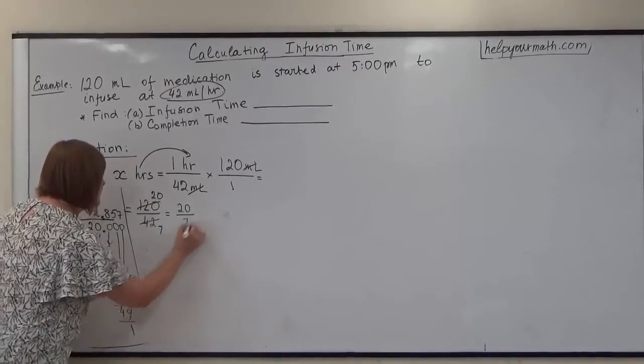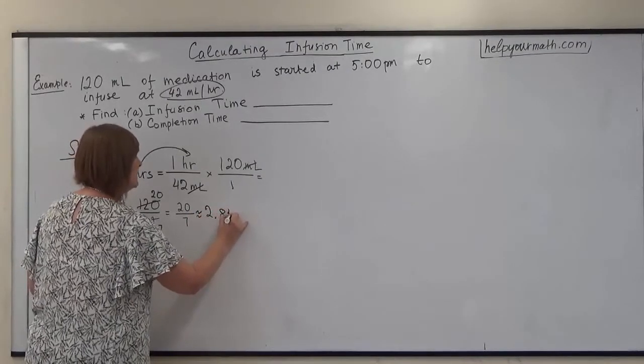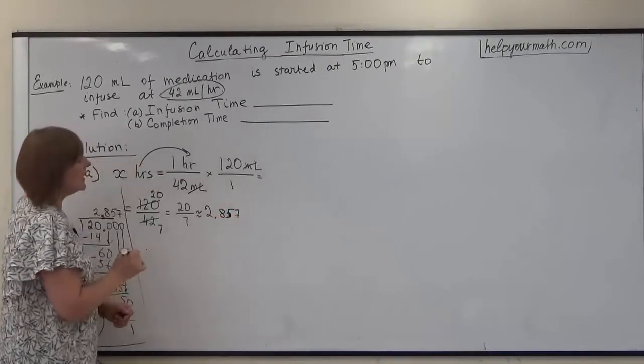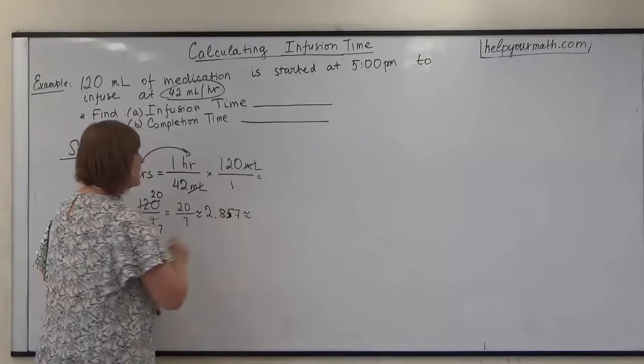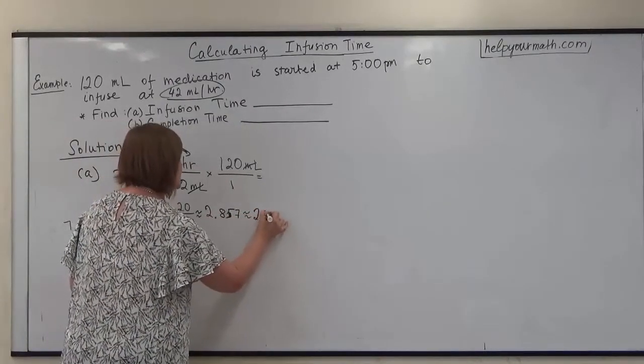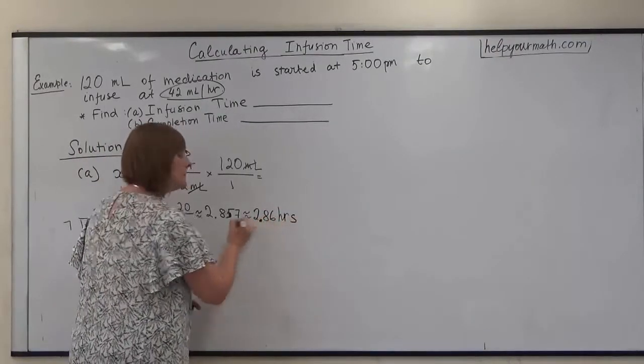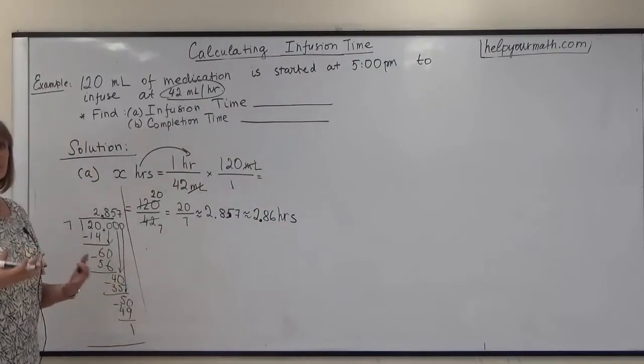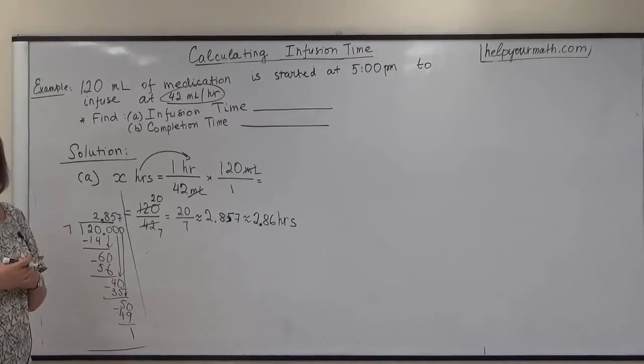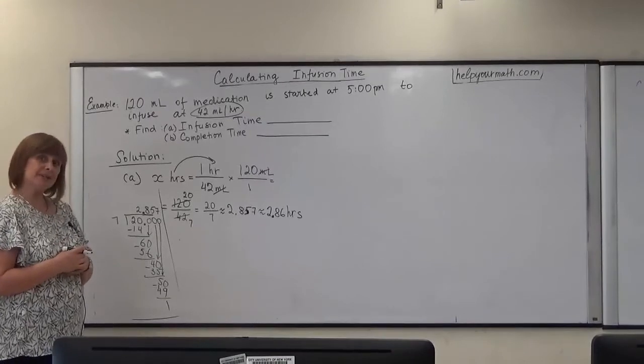So we will round that. We will have approximately 2.857. From that point we probably need to round a little bit more to the hundredths place, 2.86 hours. The problem here is that we cannot usually give the answer as hours using the decimal.